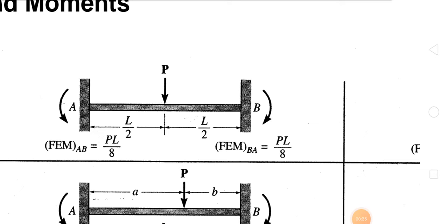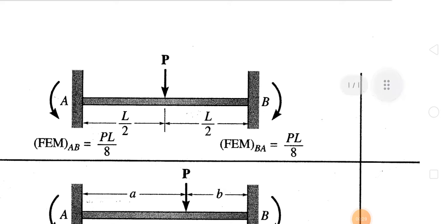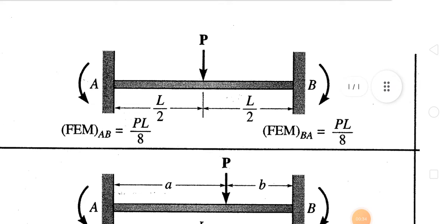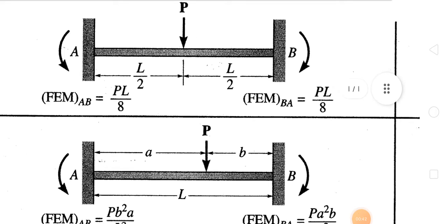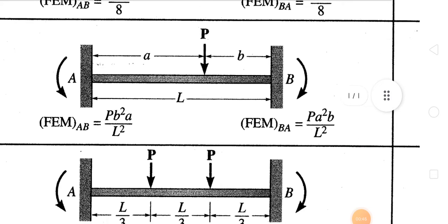The point load is acting in the middle, so one side distance is L/2 and the other side is also L/2. The fixed end moment at point A and point B will both be the same: PL/8 at the right end and PL/8 at the left end.